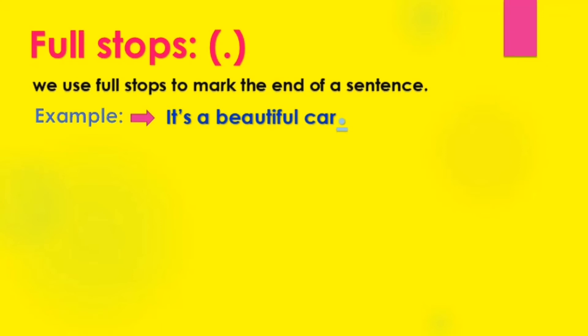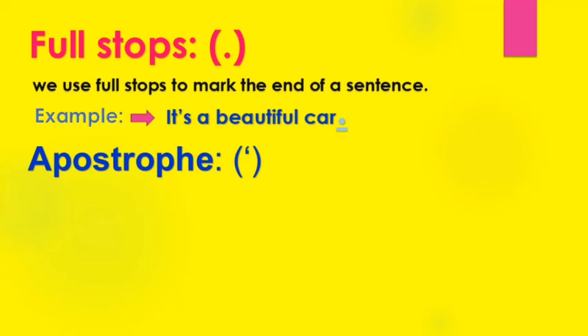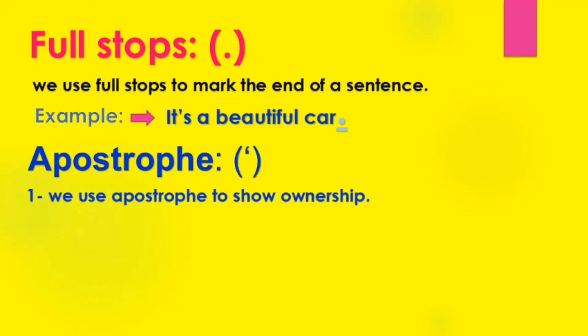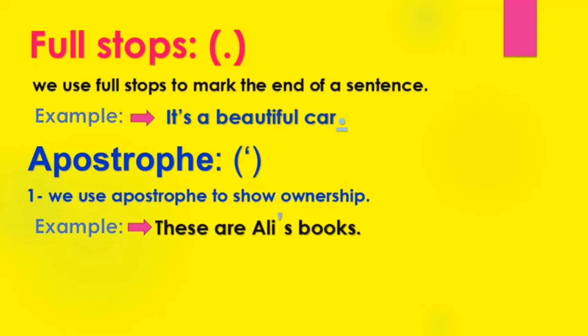Now let's move to apostrophe — الفاصلة العلوية. We use apostrophe to show ownership — نستخدم الفاصلة العلوية لإظهار الملكية. For example: 'These are Ali's books.' Here we show that these books belong to Ali — هذه الكتب هي لعلي. So we add an apostrophe before the letter S.